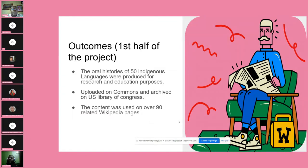Regarding outcomes for the first half of the project: we have been able to produce oral histories for 50 indigenous languages for research and education purposes, and have uploaded these languages to Commons. By the first week in October, the first batch of these languages will be archived at the US Library of Congress. The content has been used on relevant related Wikipedia pages, and by the second half of this project, we are looking at going to over 500 languages documented.